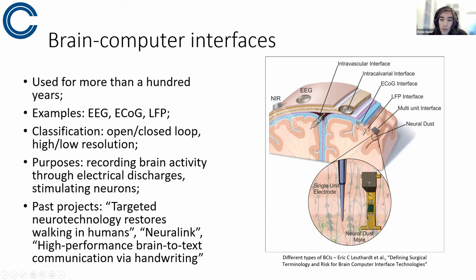So ECoG is a kind of intracranial EEG. It has a much higher, it can get much more precise results from the neural activity there. And LFP are very precise units, they are basically implemented in the brain quite deeply, so to say, and they can get various frequencies, and they are very, very precise, even being able to record one neuron at a time.